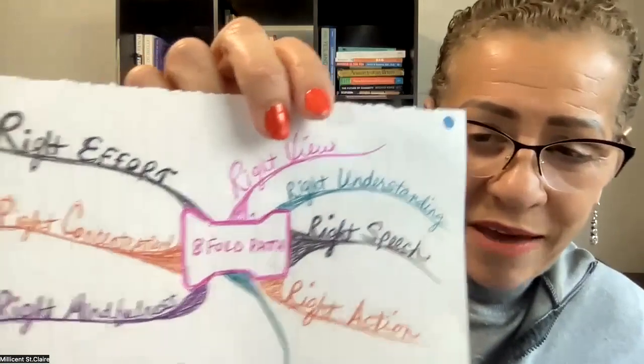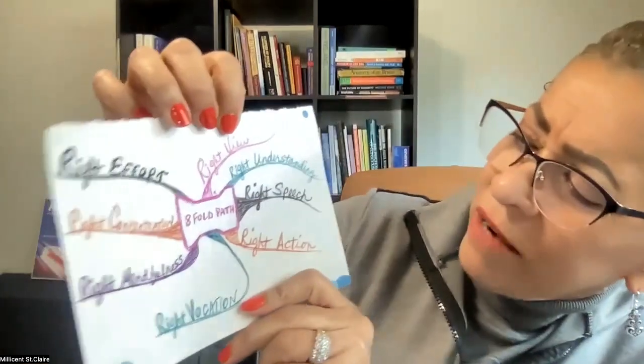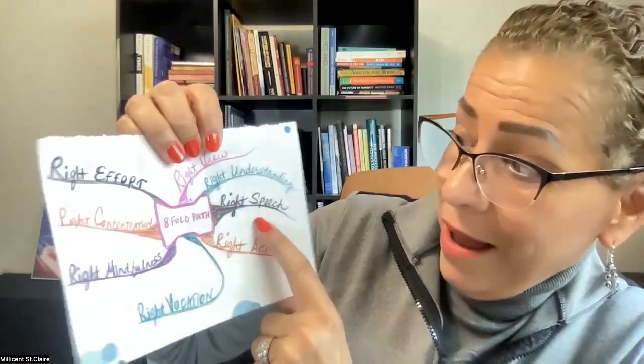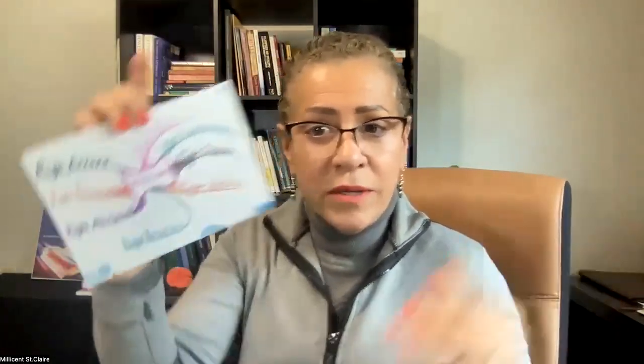Here's a couple of little baby maps. This one is called 'The Eightfold Path' from the Buddhist tradition. The Buddha talks about the four noble truths: first, life involves suffering; second, all suffering is a result of attachment to desire; third, the cessation of suffering must be realized; and fourth, the way out is the Eightfold Path. I couldn't remember them all so I looked them up and created a little map: right view, right understanding, right speech, right action, right vocation, right mindfulness, right concentration, and right effort.